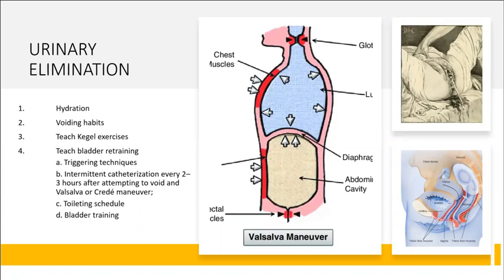To encourage urinary elimination: keep the client hydrated with 1,500 to 2,000 mL per day. Know the client's voiding habits and pattern. Provide time and privacy for complete bladder emptying. Teach Kegel exercises, which strengthen pelvic floor muscles — have the client tighten pelvic muscles for a count of three, relax for a count of three, and repeat in lying, sitting, and standing positions. Also teach bladder retraining to help the client hold more urine for longer periods.